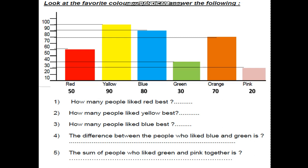Now we will answer the questions. How many people like red best? From the graph, they are 50 persons. How many people like yellow best? From the graph, they are 90 persons. How many people like blue best? They are 80 persons.